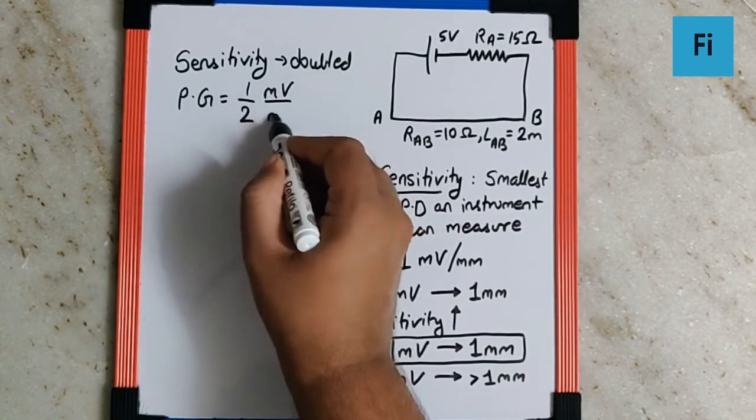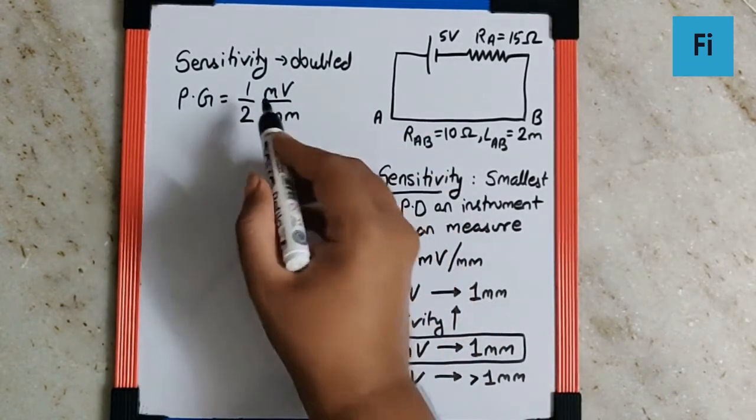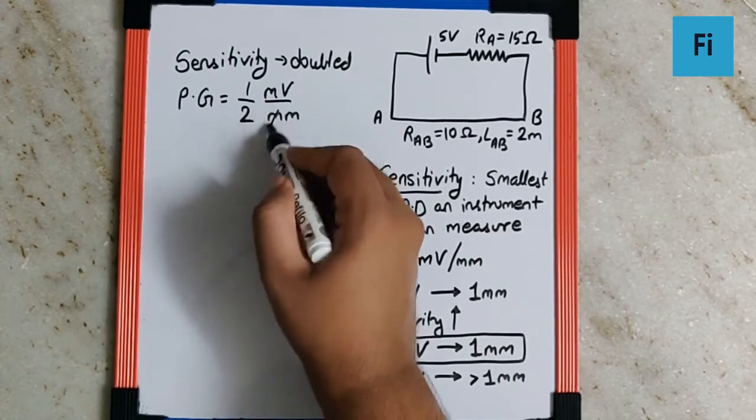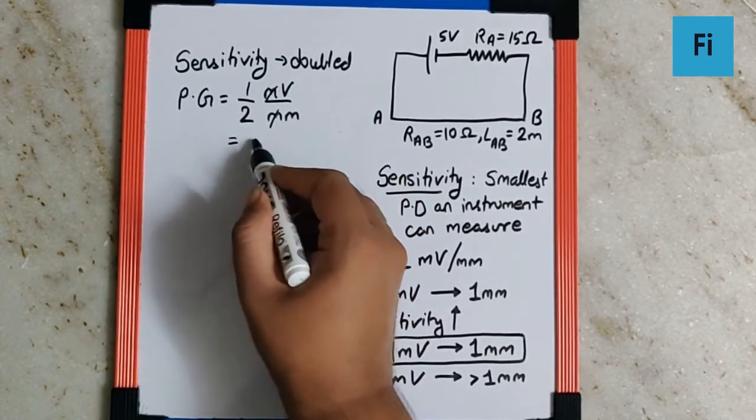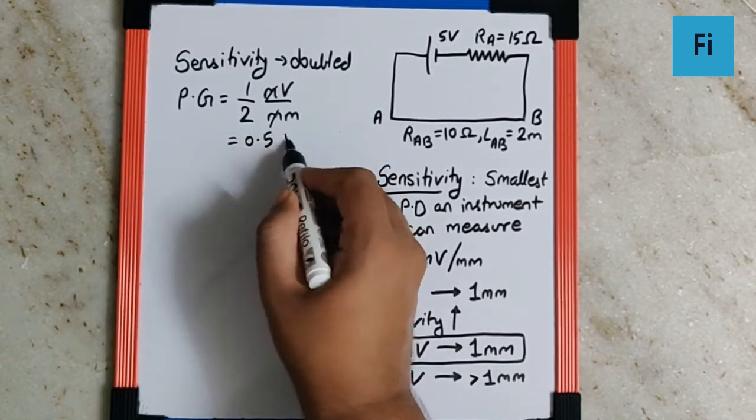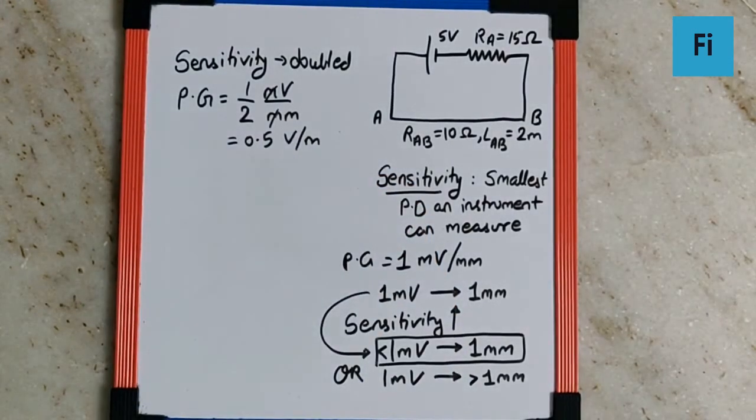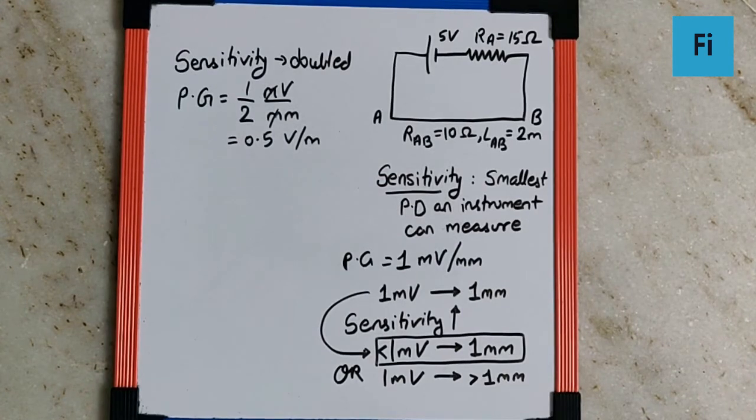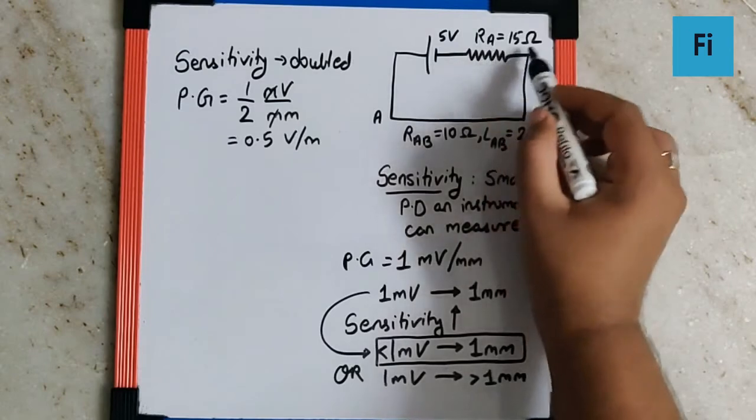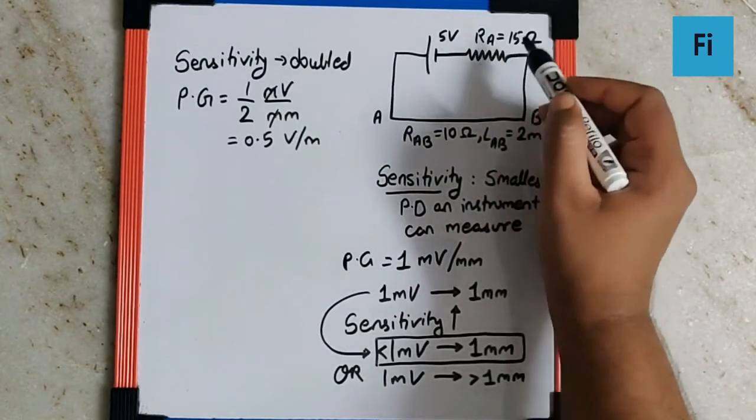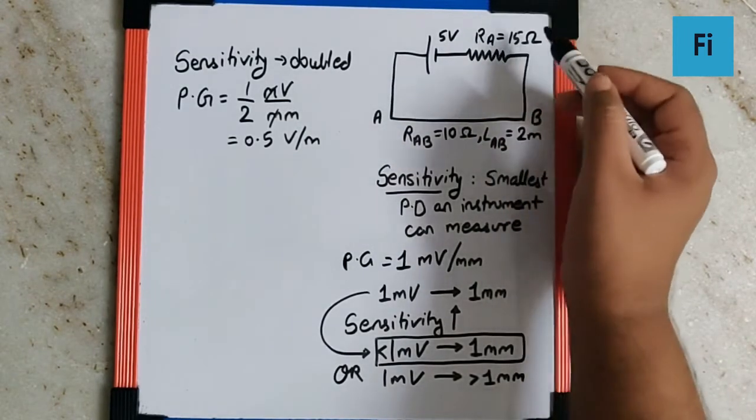We can cancel the millivolts and say 0.5 volt per meter is the potential gradient which we are looking for when we want to double the sensitivity. And for that particular sensitivity what should be the value of RA? Definitely not 15, so we need to change this value to get this sensitivity.